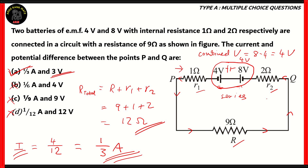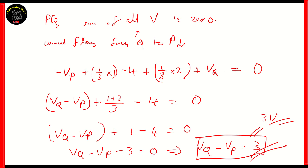First things first, we need to find the combined voltage and the combined resistance so we can find the total current. Once we have the total current, we can use that value to find out the potential difference between P and Q by calculating all of the potential differences across the resistors and also across the cells. So the final answer is 1/3 amperes and 3 volts.